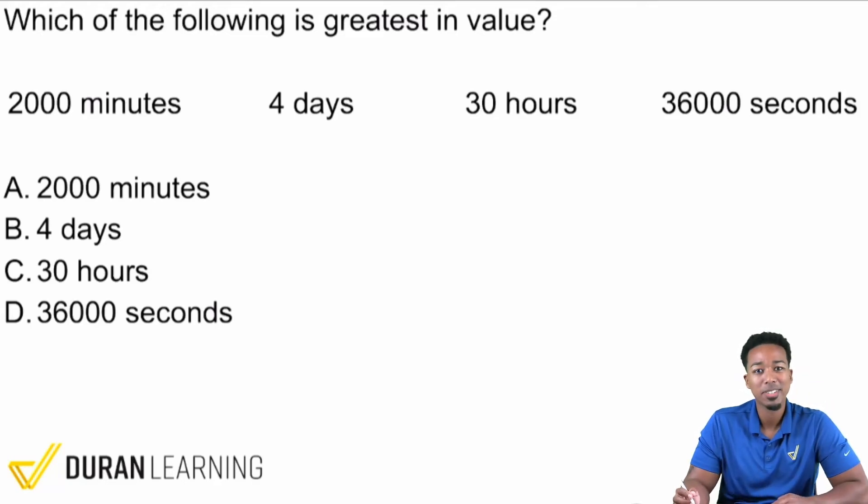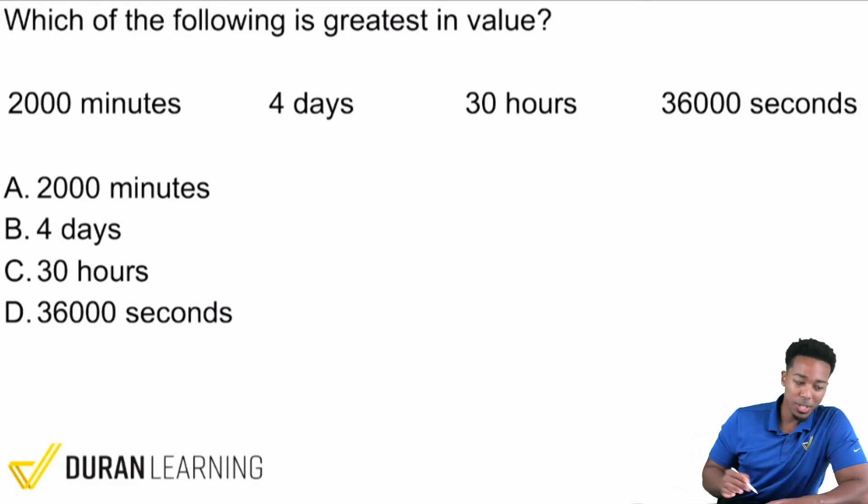Welcome back to Math Party People. The question reads: which of the following is greatest in value? Taking a look here we have 2,000 minutes, 4 days, 30 hours, and 36,000 seconds.